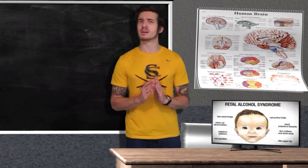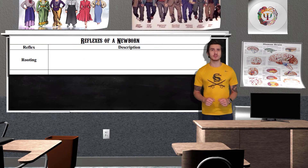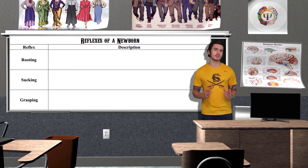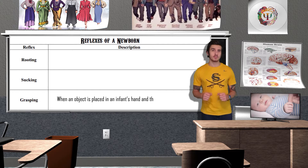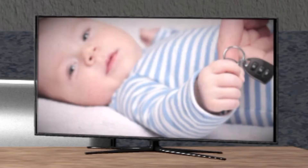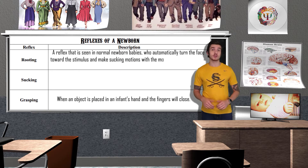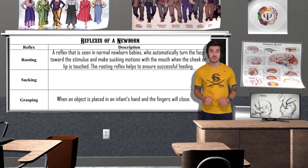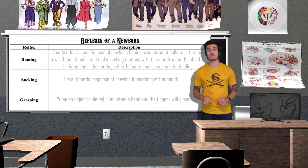Something all humankind has in common — we were all born babies. At birth we are equipped with basic reflexes that increase the likelihood of our survival. Grasping is when an item is placed in the palm of a baby's hand and the baby holds on to it. Rooting is the baby's response of turning its head when touched on its cheek and trying to put the stimulus into its mouth. Sucking is the automatic response of drawing anything in at the mouth. Both sucking and rooting allow a baby to stay nourished.